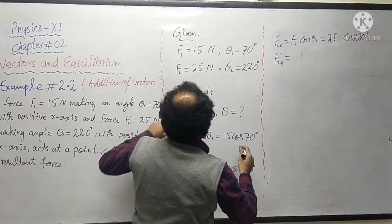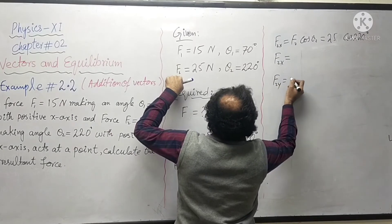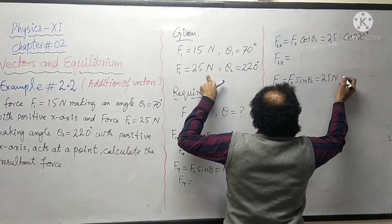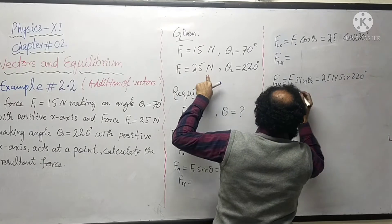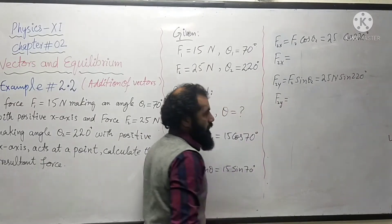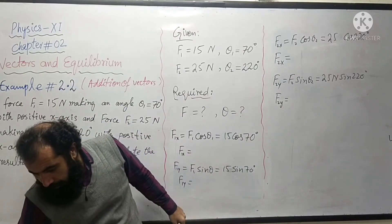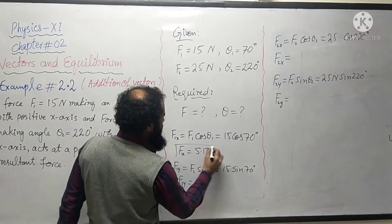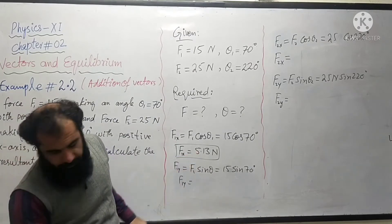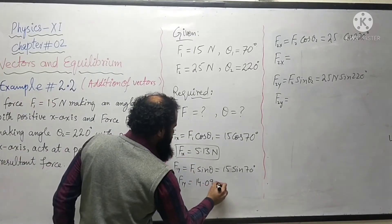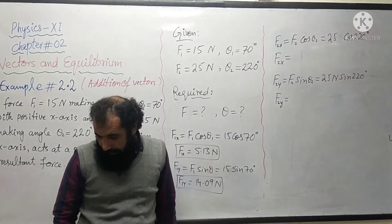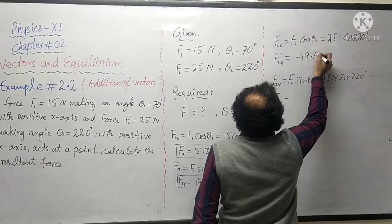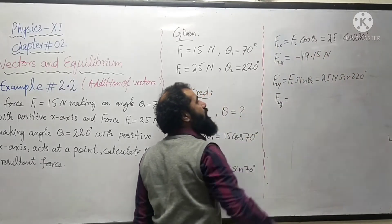The y-component of the second vector is F2 sin theta-2, which is 25 newtons times sin 220 degrees, giving F2y. Computing all values: F1x is 5.13 newtons, F1y is 14.09 newtons. F2x is minus 19.15 newtons, since 220 degrees is in the third quadrant and is negative.